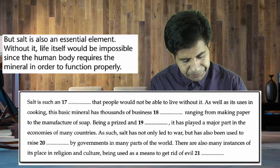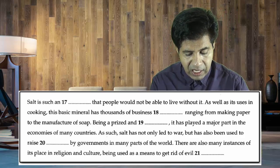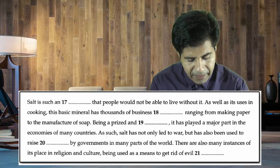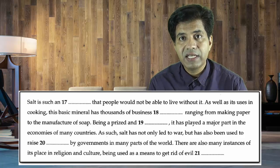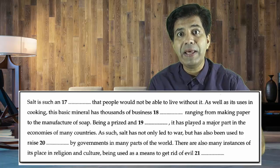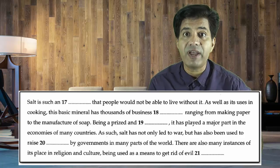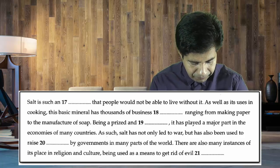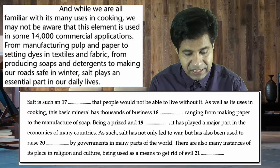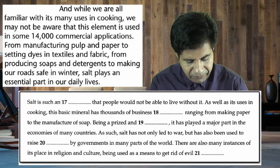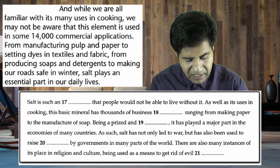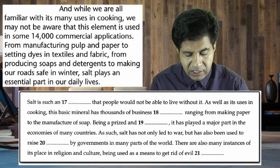Now for the next blank: the clue words are 'cooking' and 'thousands of business.' Any number in the thousands is a very useful clue. I found it — please watch carefully. It says: 'While we are familiar with its many uses in cooking, we may not be aware that this element is used in some fourteen thousand commercial applications.'